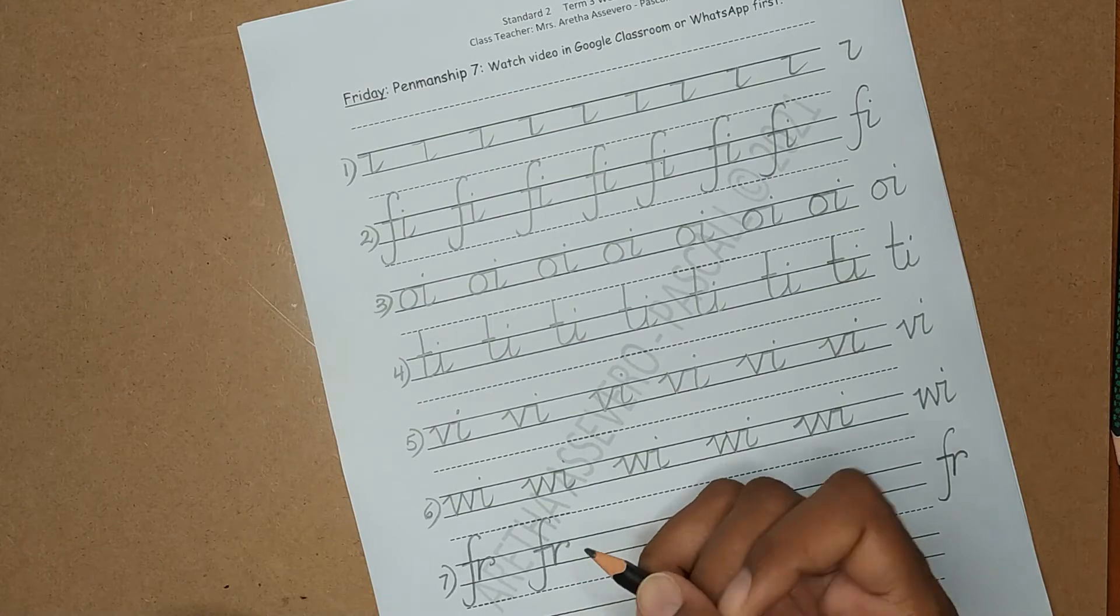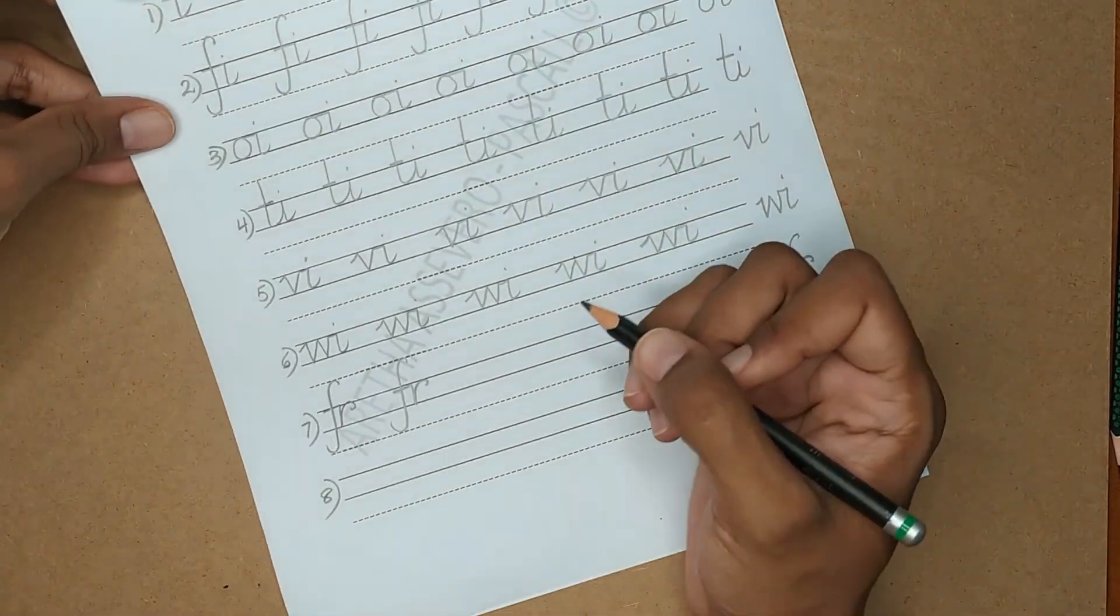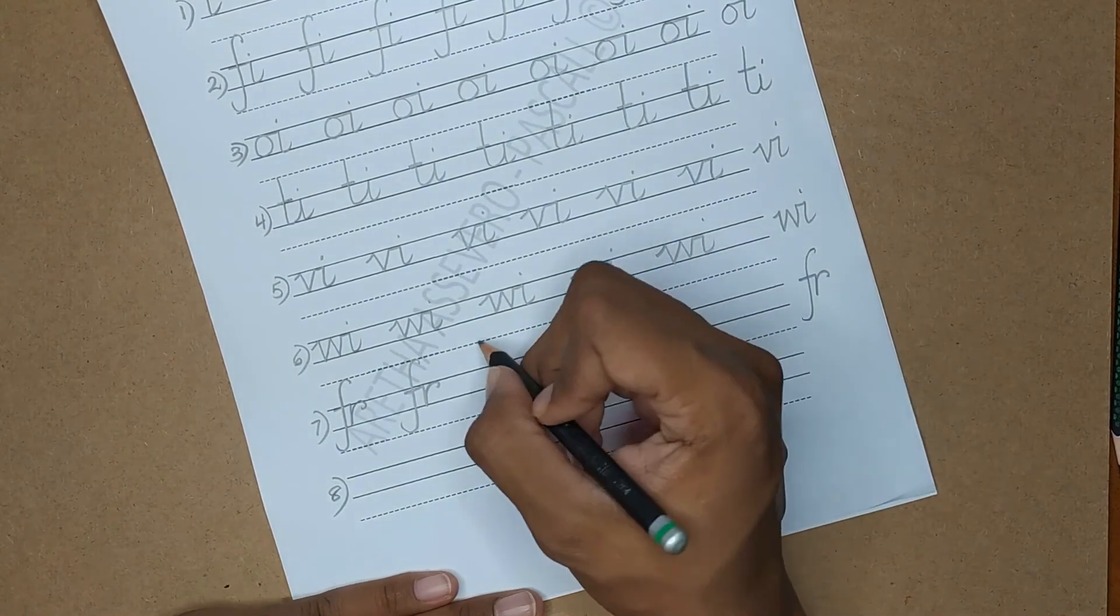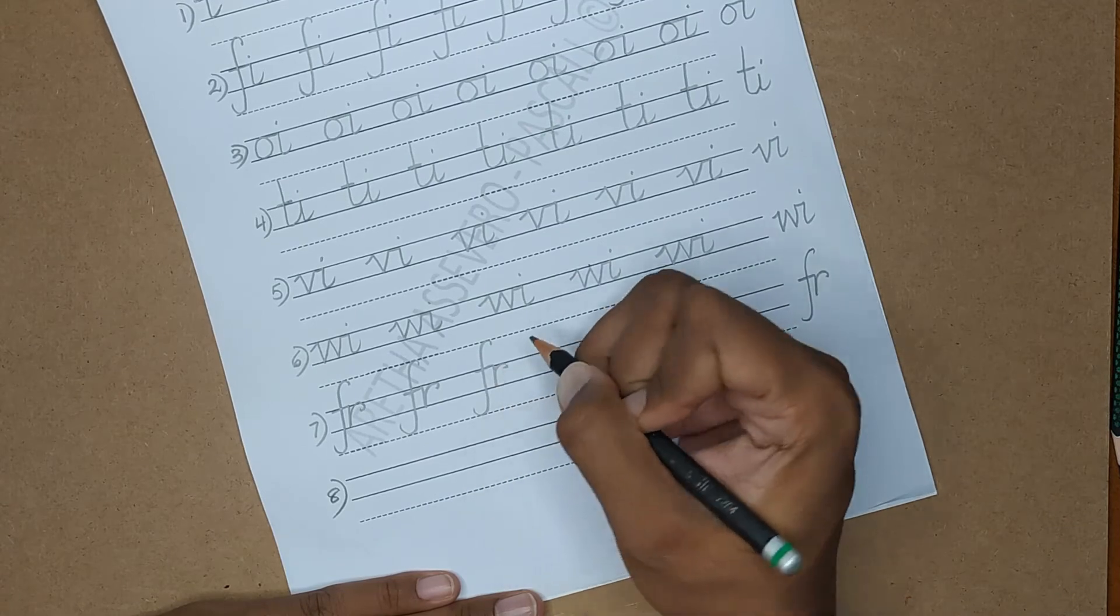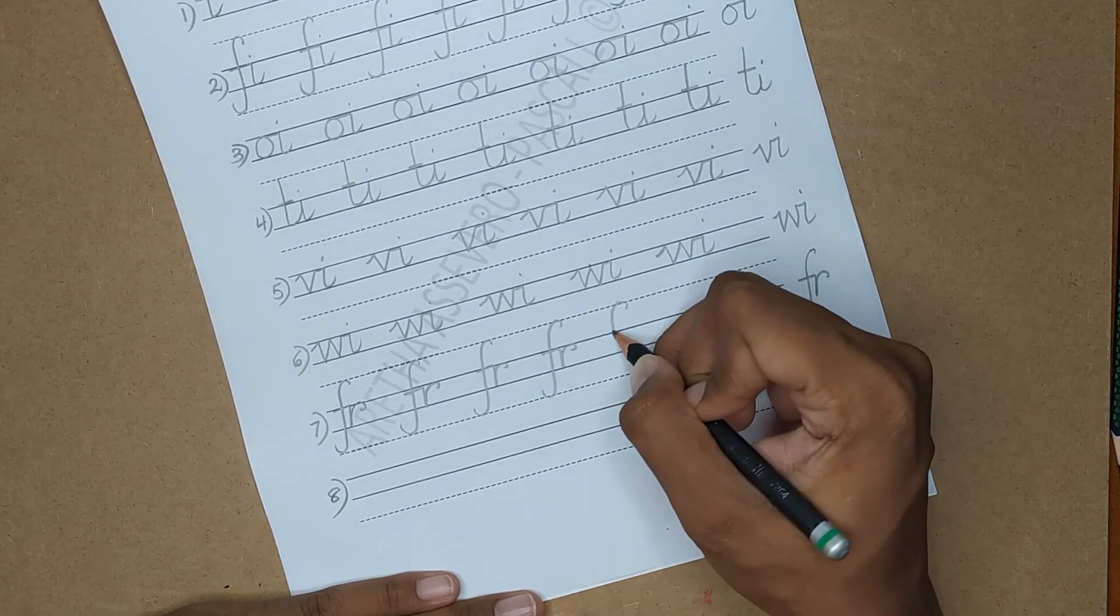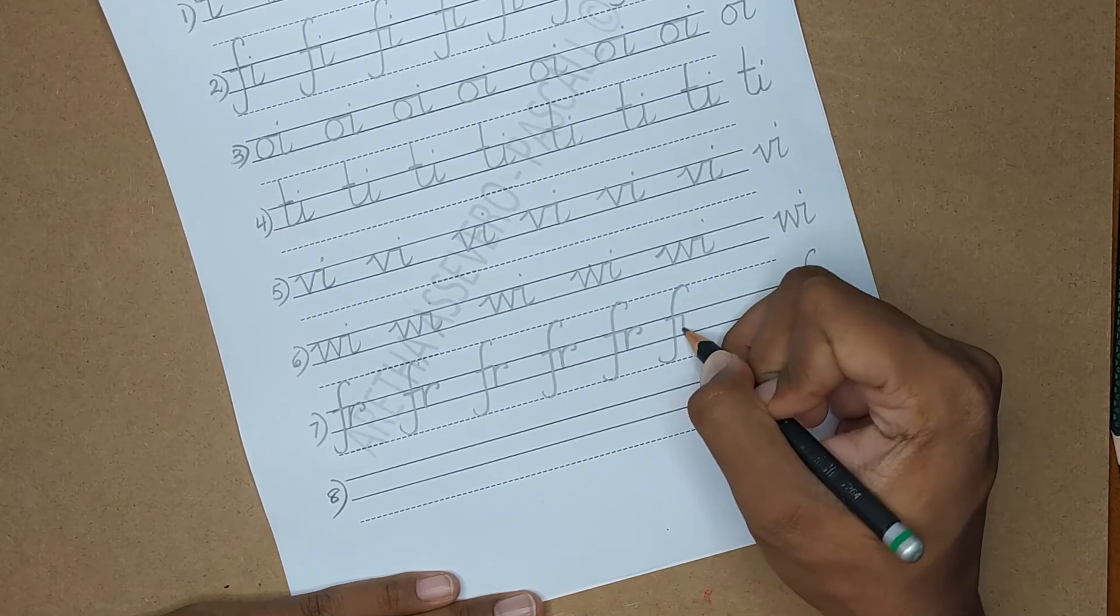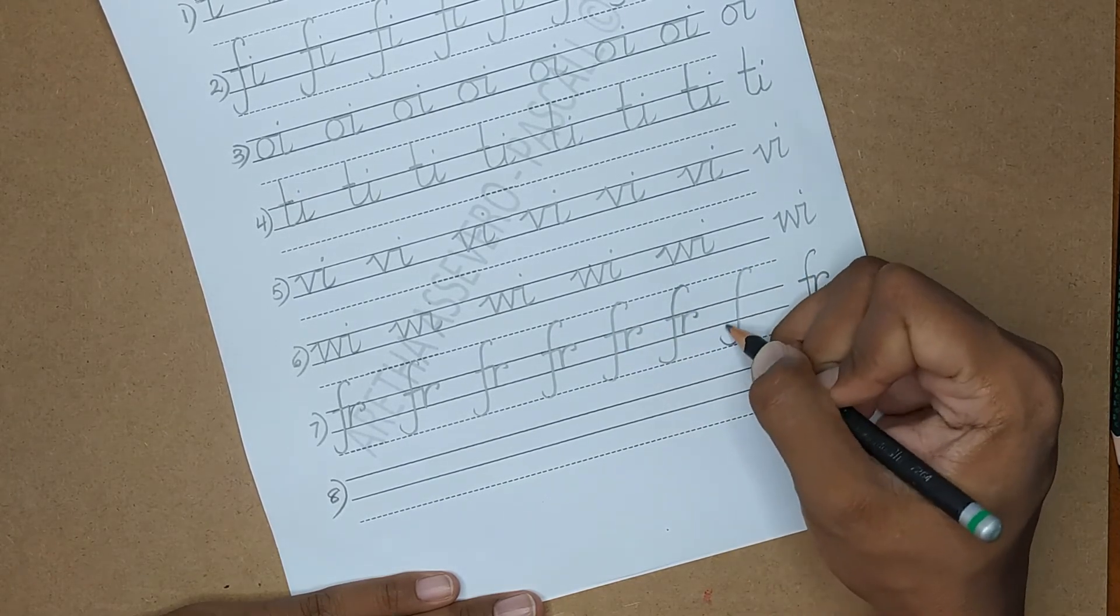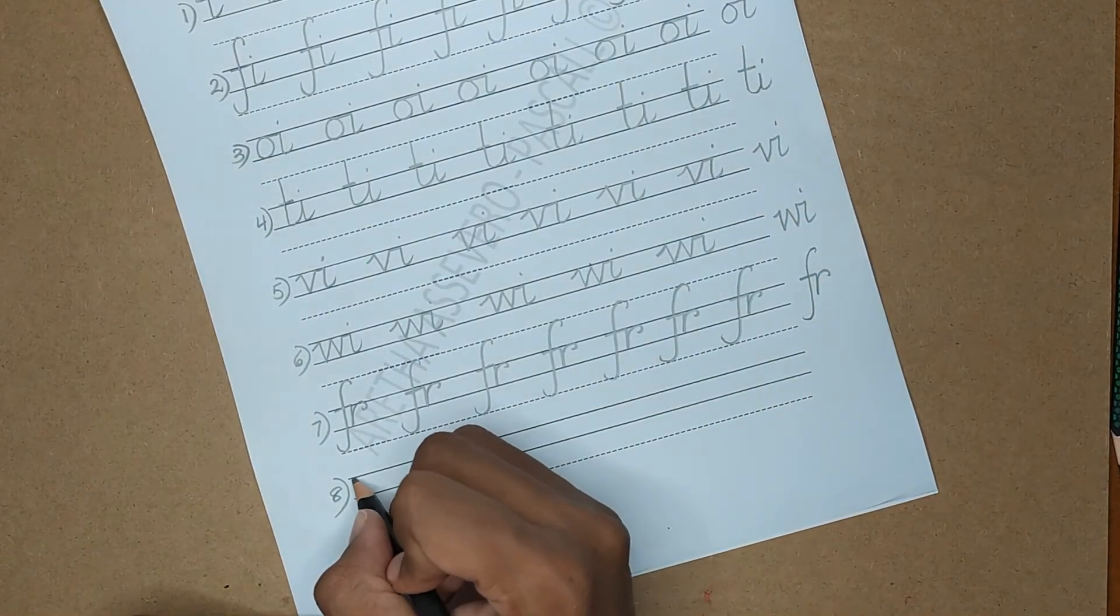And as always, be accurate. Practice your accuracy by writing exactly what you see modeled here. Writing isn't hard, it's very simple. This new horizontal link will ensure that your letters are joined, they are nice and smooth, and they flow into each other.